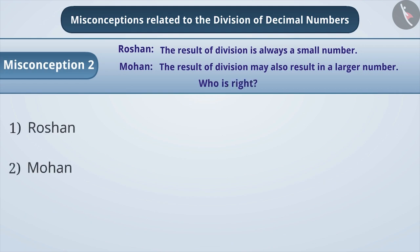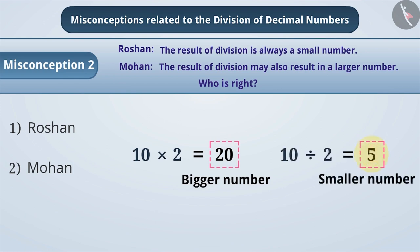Some students have this misconception that the result of multiplication is always a large number. Similarly, they also have the misconception that the result of division is always a small number.